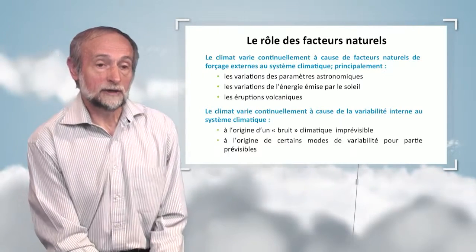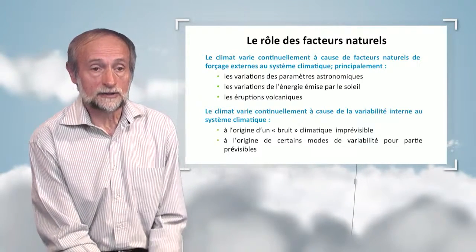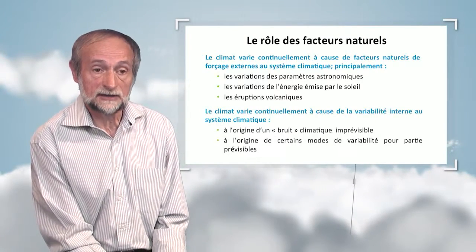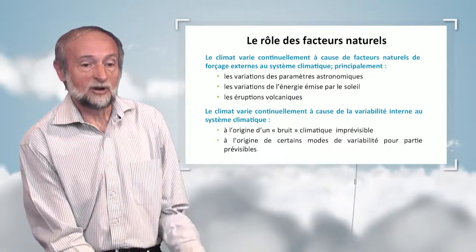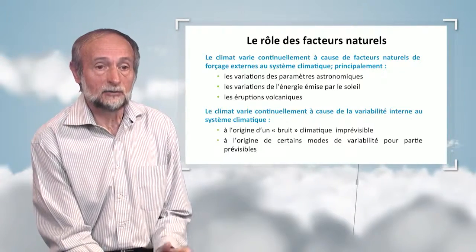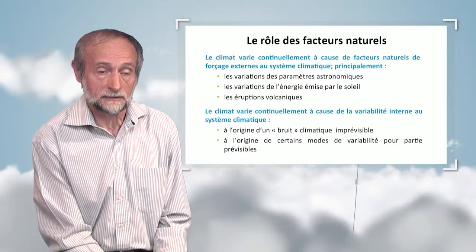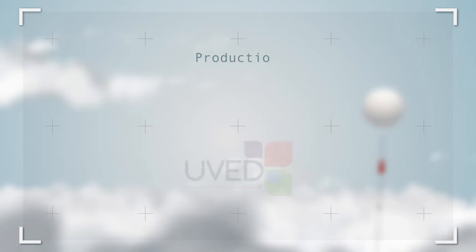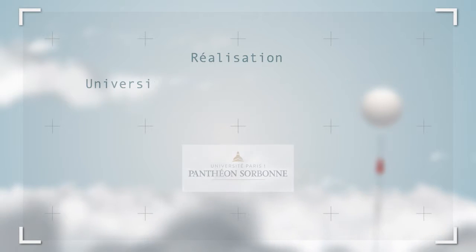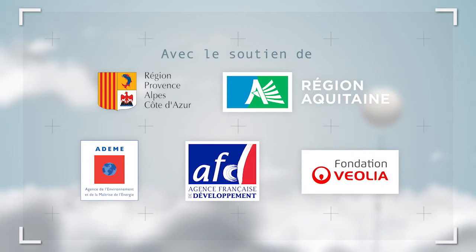Another source of variability, which is also natural, is internal variability due to the interaction between the various components of the climate system — sometimes chaotic, something that seems random — but also variability of modes that can be predicted, such as the El Niño phenomenon in the Pacific area.